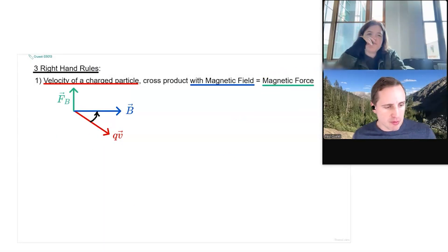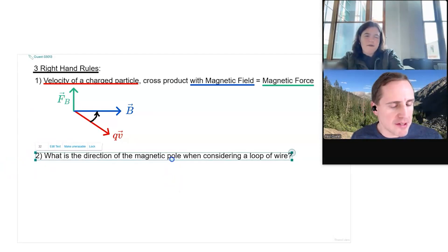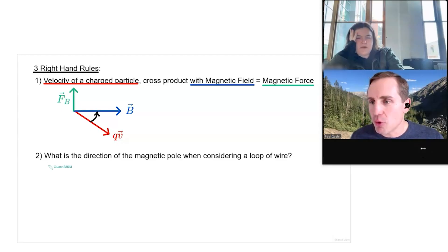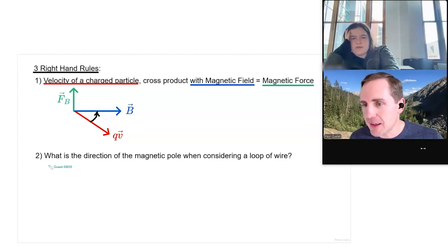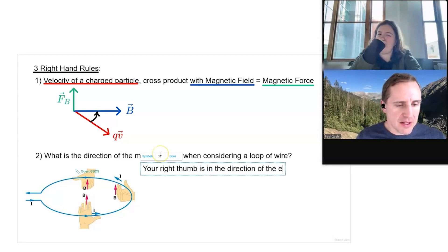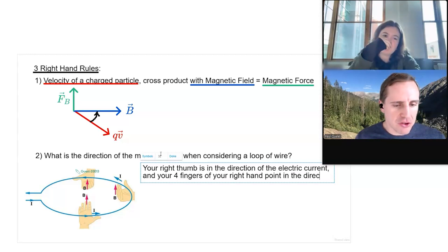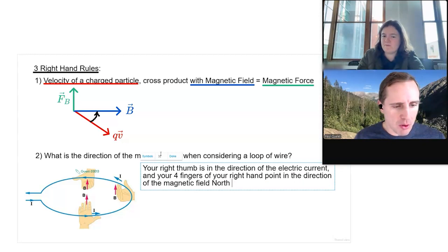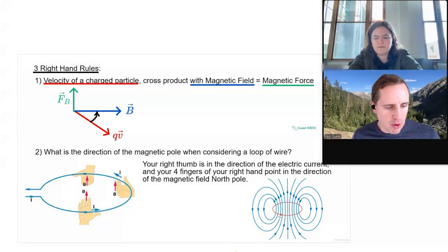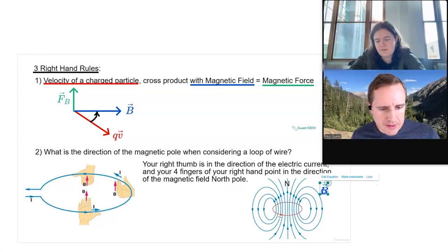Right-hand rule two addresses the following question: what is the direction of the magnetic pole when considering a loop of wire? For the second right-hand rule, your right thumb is in the direction of the electric current, and your four fingers of your right hand point in the direction of the magnetic field north pole. The magnetic north pole is up here, and the magnetic field lines come out of the loop.